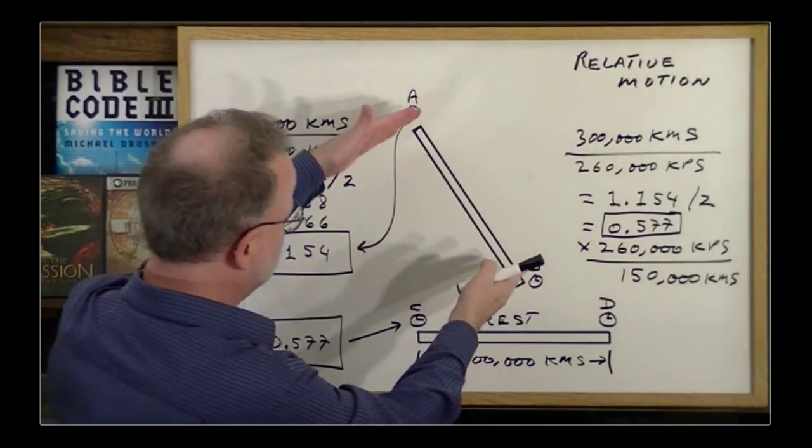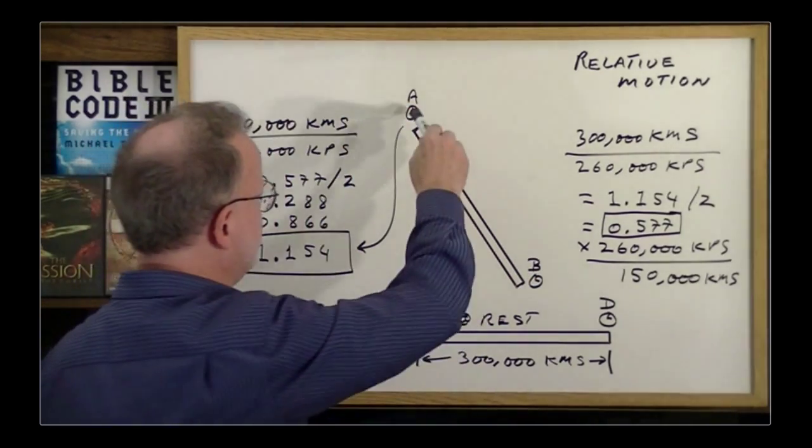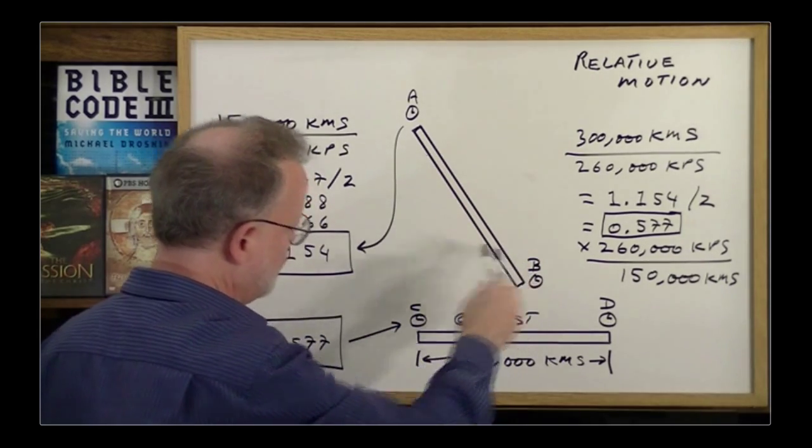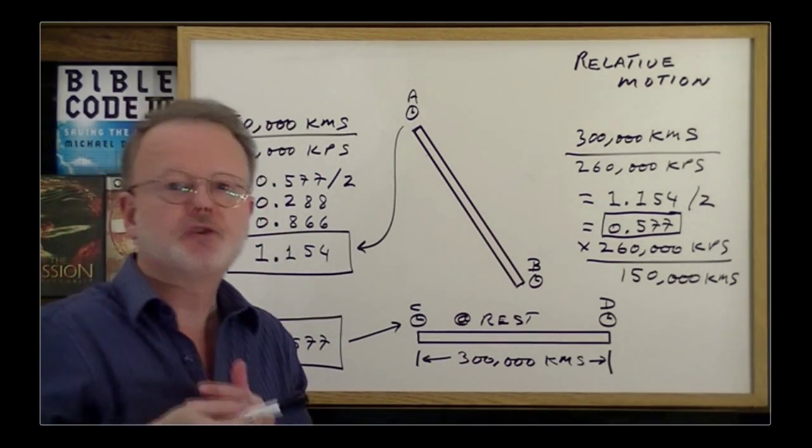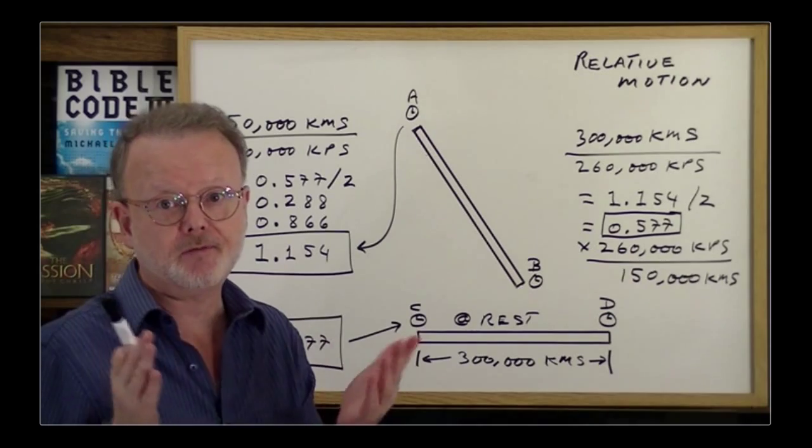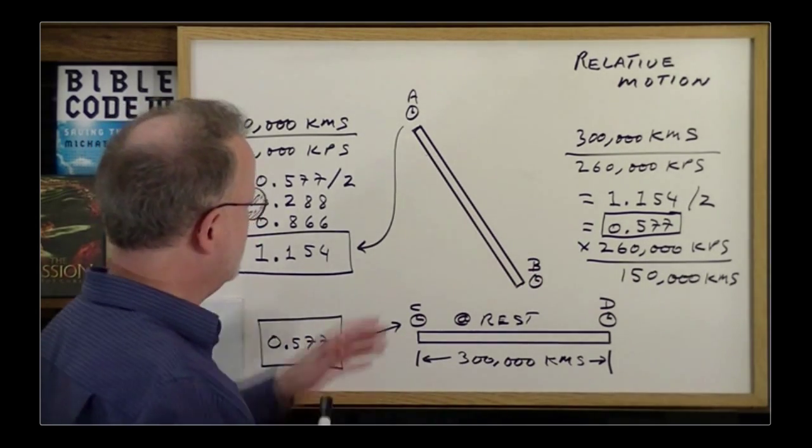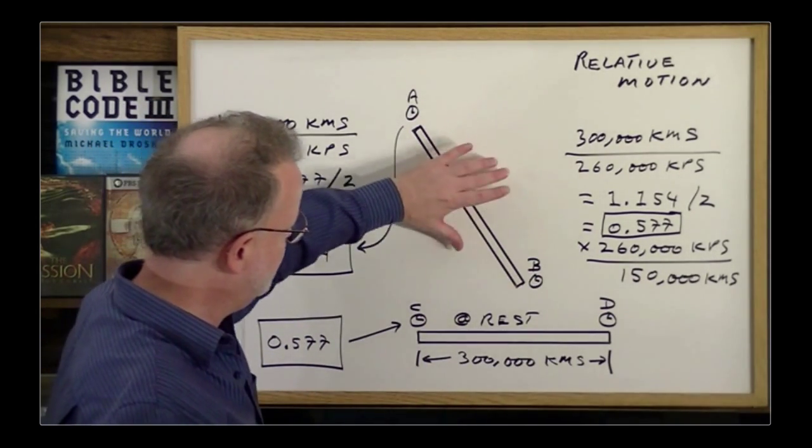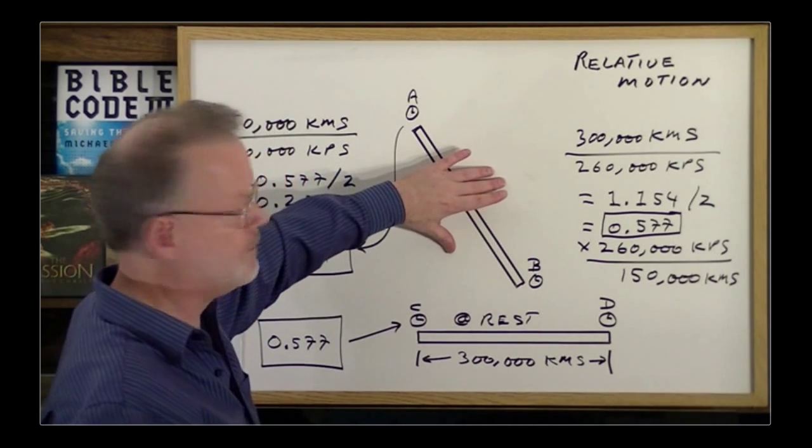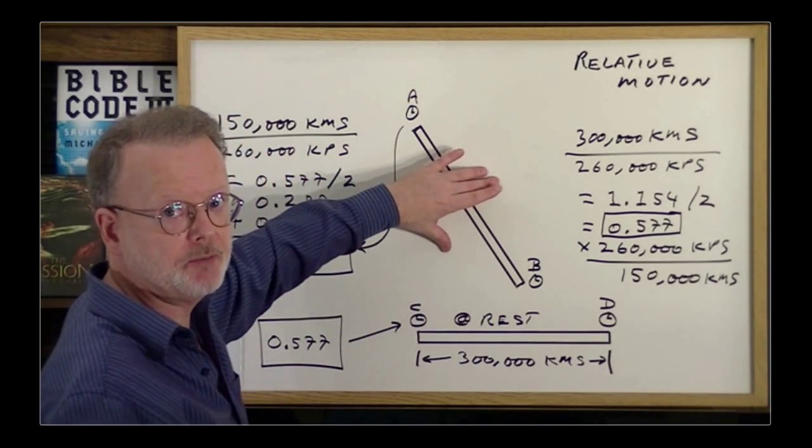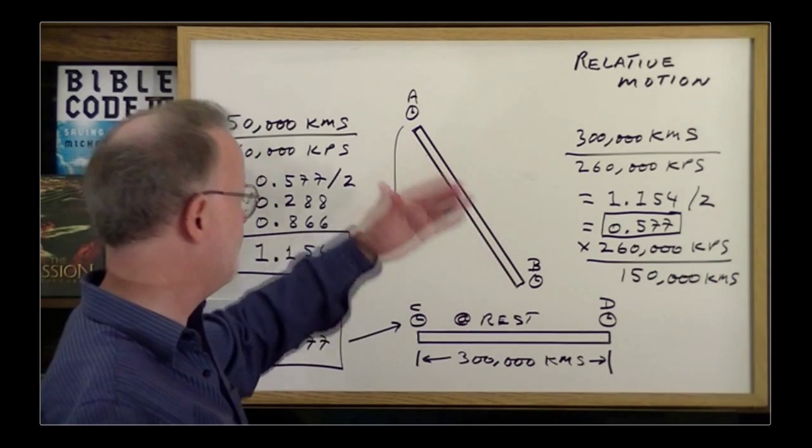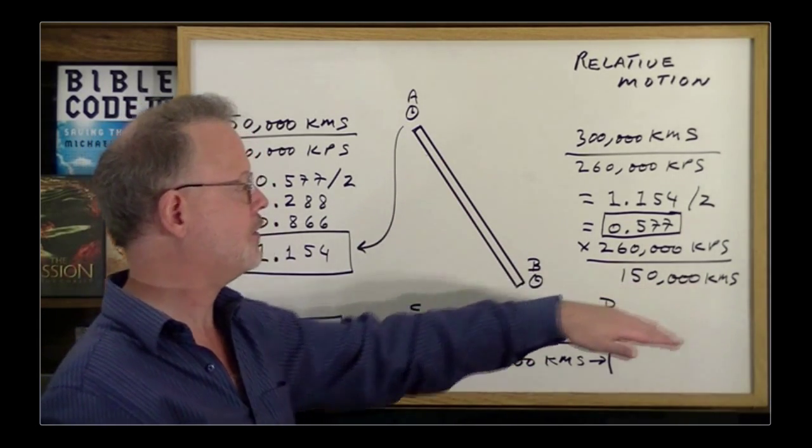And as you recall, they still think that this spaceship is 300,000 kilometers long, because it seems to take one second for light to go from one end to the other. Or if they measure it with a wooden ruler, the wooden ruler shrunk to half length, so it still seems to be 300,000. So, from their point of view, this one is half the length of this. Therefore, it has to be 150,000 kilometers long.